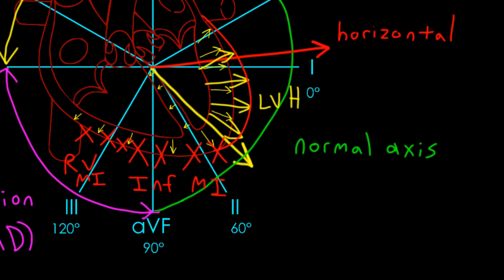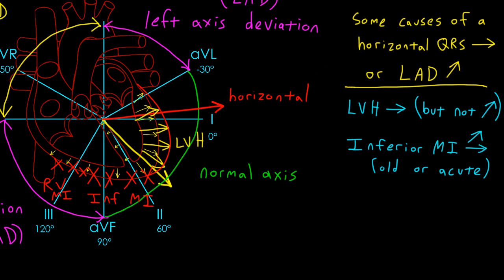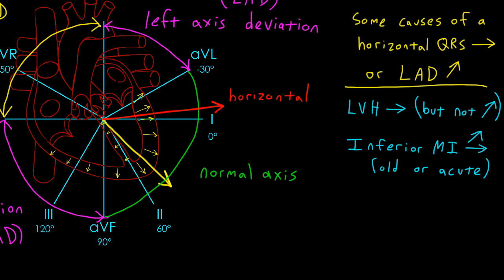We'll talk in more detail about myocardial infarctions later, but this gives you an idea of the kinds of things that can influence your QRS axis. As for body habitus, obesity is associated with a more horizontal QRS axis, likely due to the anatomic positioning of the heart when the diaphragms sit higher. Similarly, a patient with ascites or a woman who's pregnant might also have a more horizontal QRS axis.